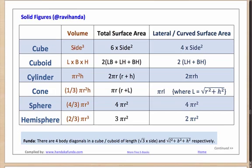In case of a cube, you have all six faces which are equal to each other. All sides are equal and the volume is given by side cubed. The surface area for each side is side squared, so the total surface area is six times side squared. The lateral surface area excludes the base and the top, so for the four sides it becomes four side squared.